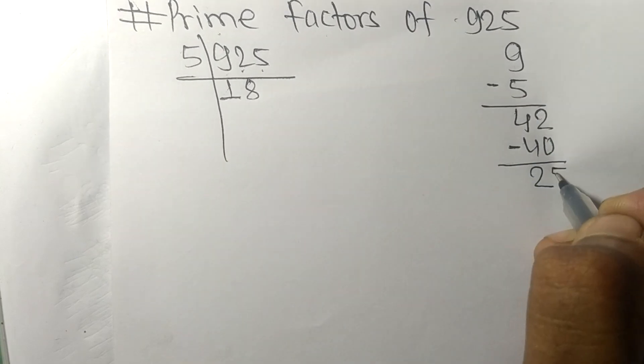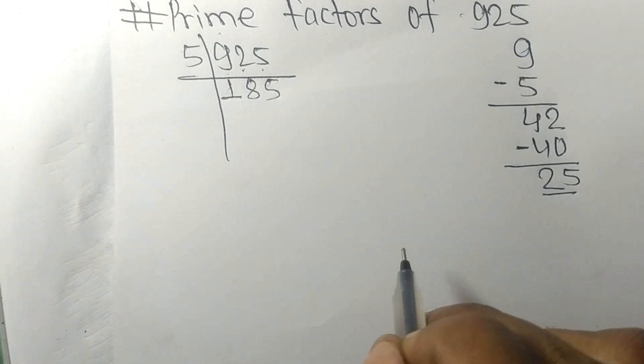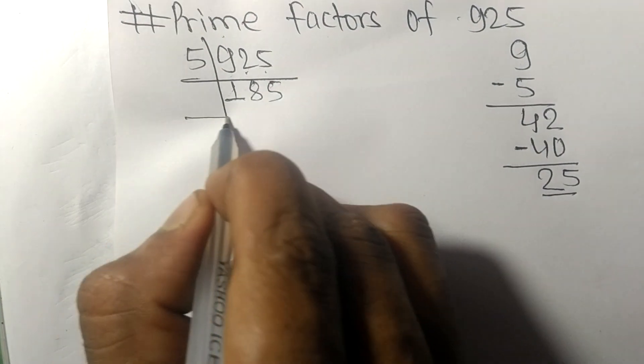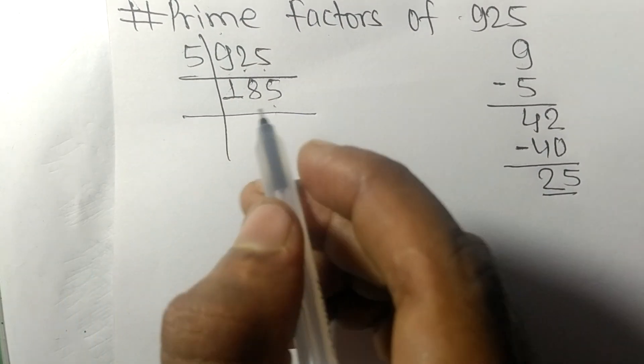Bring down the 5 to get 25. 5 times 5 equals 25. It is exactly divisible by 5.